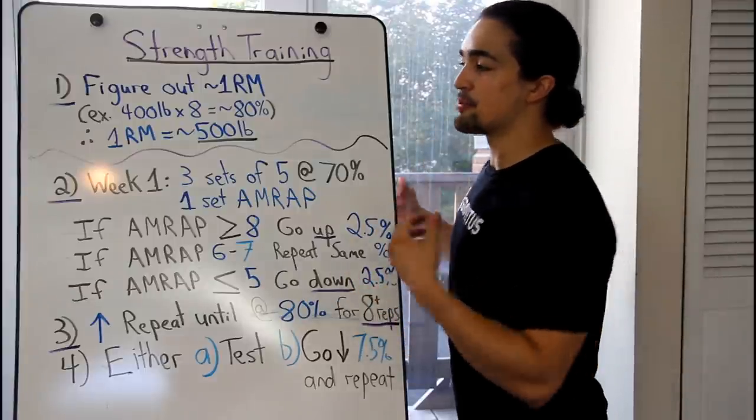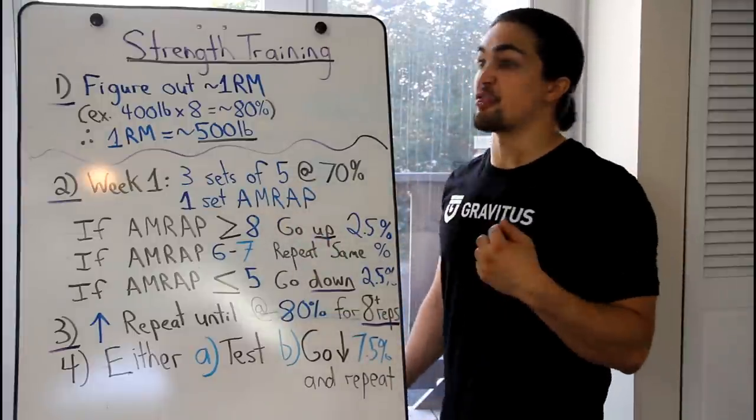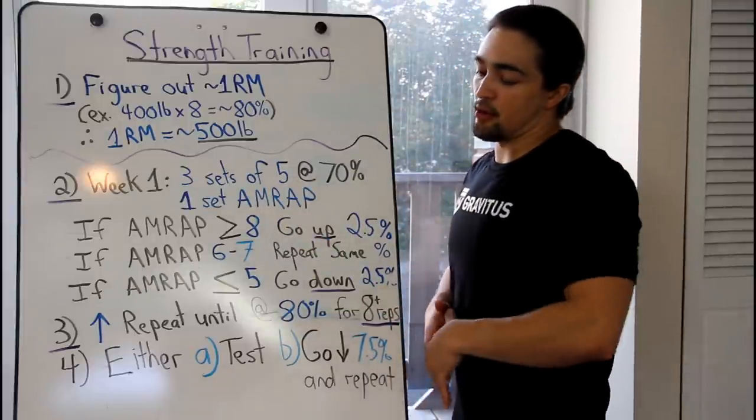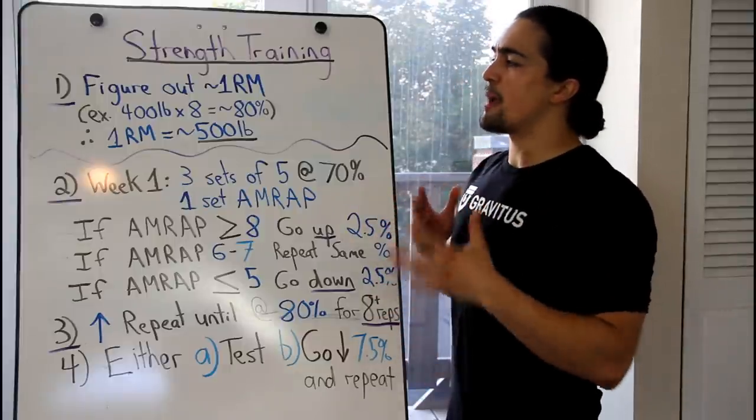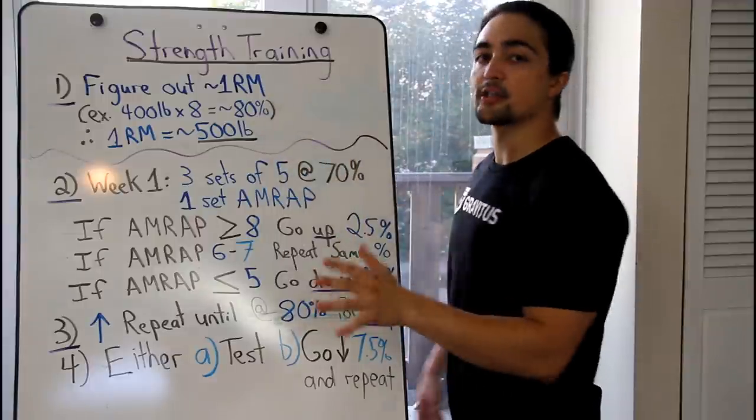Here's the problem with a lot of percentage-based programs. So, they'll say 80%, do three sets of three. And, they'll outline maybe 12 weeks, 16 weeks, 4 weeks, 24 weeks, whatever, a certain amount of weeks, and they'll give you percentages based upon your one rep max. Cool.